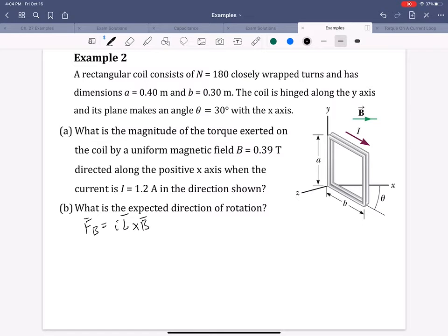For the top, pointer in the direction of the current, so out, middle finger in the direction of B. Thus, we have a magnetic force up, which doesn't do any rotation. It kind of just wants to pull this up, but it's fixed along the x-z plane. So that doesn't rotate it. Similarly, there's a force downwards, also does not rotate it.